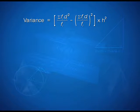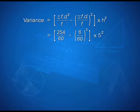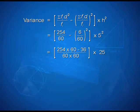Now, variance can be calculated as summation Fi Di square upon summation Fi minus summation Fi Di upon summation Fi whole square into h square. Using the values, we have 254 upon 60 minus 6 upon 60 whole square into 5 square. That is equal to 254 into 60 minus 36 upon 60 into 60 into 25. And this can be calculated as 15240 minus 36 upon 60 into 12 into 5.